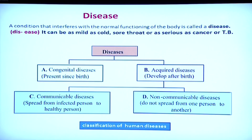Sometimes a baby is born with certain diseases — heart, lung, or liver problems. During our lifetime we acquire certain diseases that we need to be treated for. Acquired diseases can be communicable or non-communicable. Communicable diseases can spread from one person to another infected person — this includes TB, AIDS, leprosy, etc. Non-communicable diseases, on the other hand, do not spread from an infected person to a healthy person; there are other reasons for them.